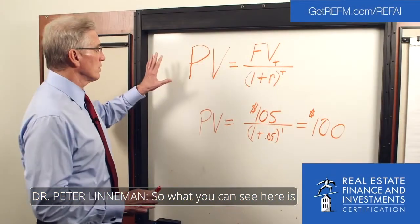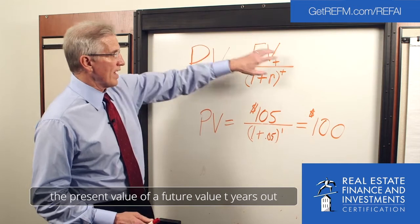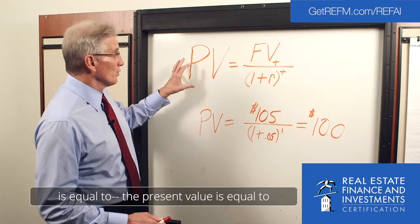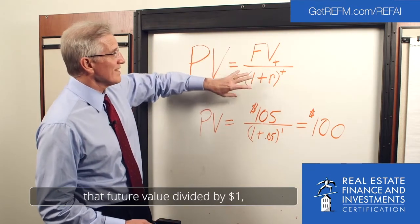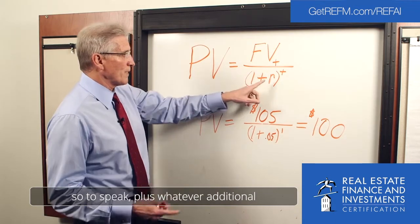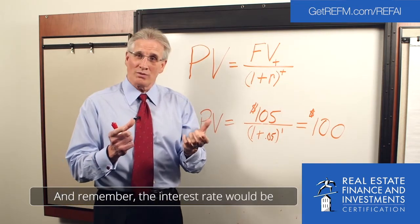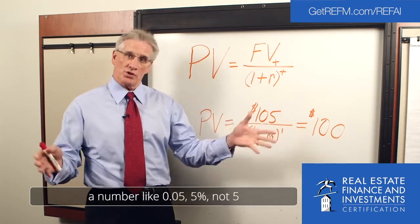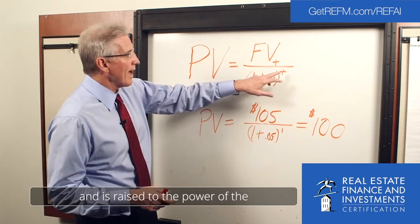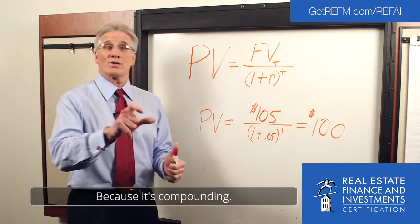What you can see here is the present value of a future value t years out. The present value is equal to that future value divided by one plus whatever additional interest rate you'd earn on it. The interest rate would be a number like 0.05 — 5%, not 5 — and it's raised to the power of the time period you're out there. Why? Because it's compounding.